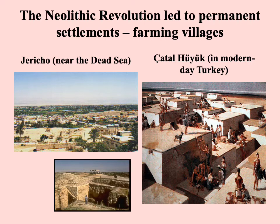We can consider two examples of early Neolithic period farming villages. One remains continuously settled from that period right up to the present — Jericho, adjacent to the Dead Sea near the lowest point on the planet. It's an oasis town in a very arid environment, located in the Middle East very close to Jerusalem, about a half hour drive away. Because it has been continuously settled and built over so many times, it's difficult to get a complete archaeological record of what it originally looked like.